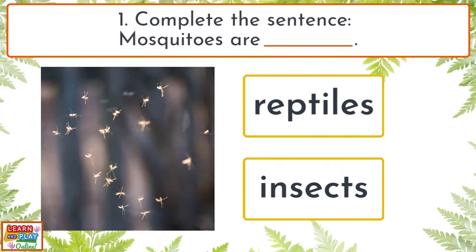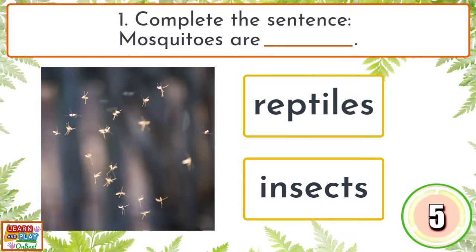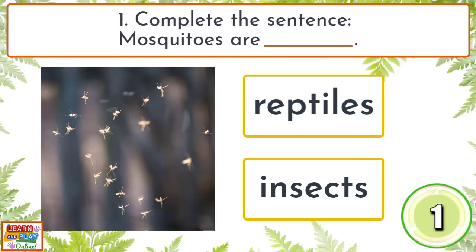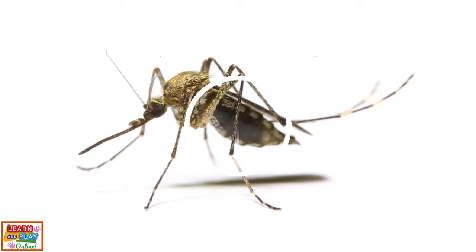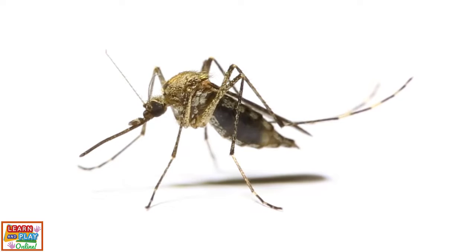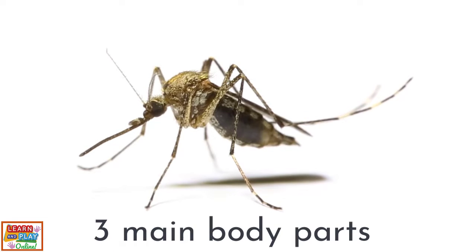Question 1. Complete the sentence: Mosquitoes are... insects. Mosquitoes are flying insects that have a pair of wings, six legs and three main body parts,